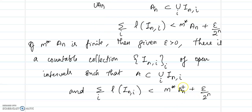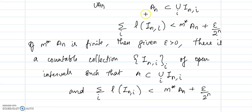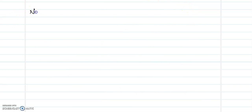Now this will hold for every n. So we have a countable cover for each Aₙ. As we know, a countable union of countable sets will again be countable. So this forms a countable cover, and the union of all the Aₙ's will again have a countable cover.